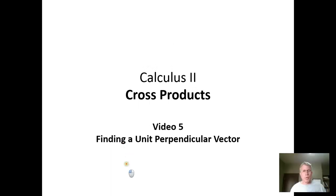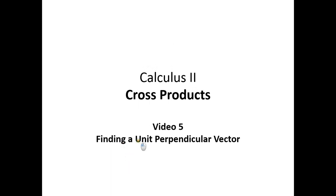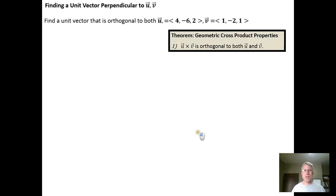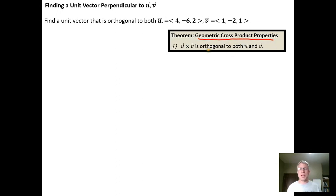In this video we're going to find a unit vector of length one that's perpendicular to two given vectors. Once we have established the geometric cross-product properties, we can use them to do things.